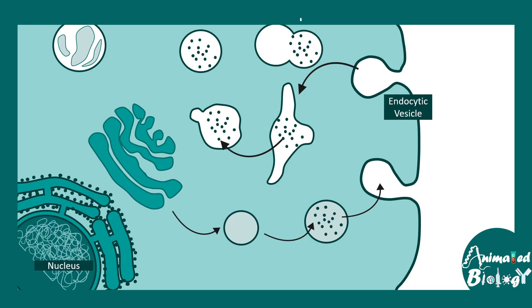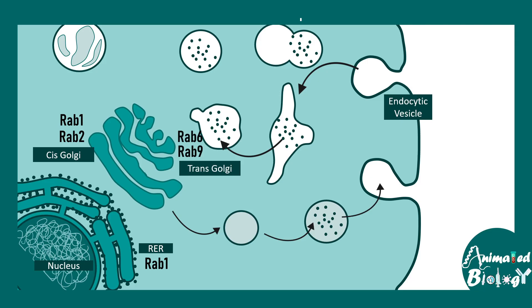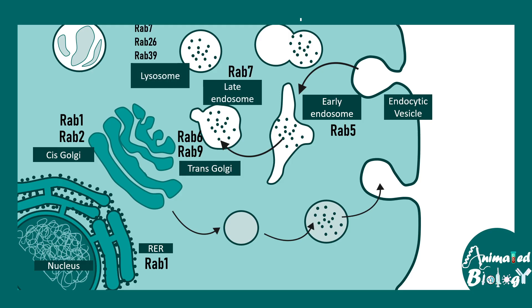Here are specific examples of RAB distribution: the endoplasmic reticulum and cis-Golgi have RAB1, and RAB2 is also present in the cis-Golgi. Trans-Golgi has RAB6 and RAB9. Early endosome has RAB5, whereas late endosome has RAB7. Lysosomes have RAB7, RAB26, and RAB39. Autophagosomes have RAB5 and RAB7. Different membrane compartments each have their own RABs which help target vesicles to a specific membrane.